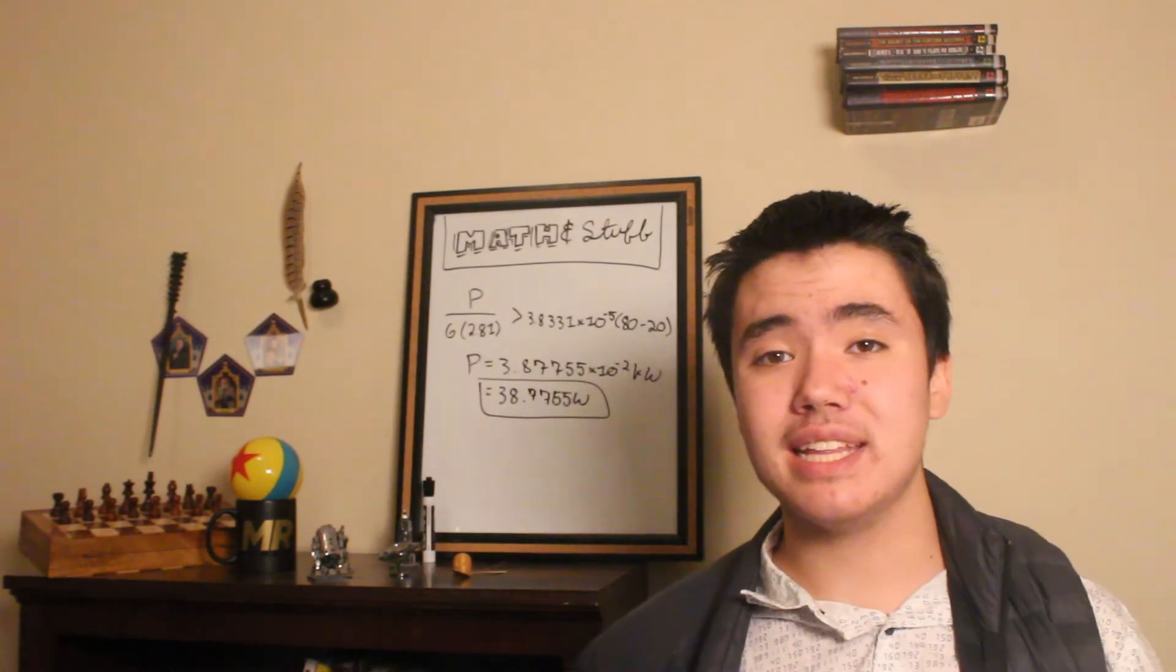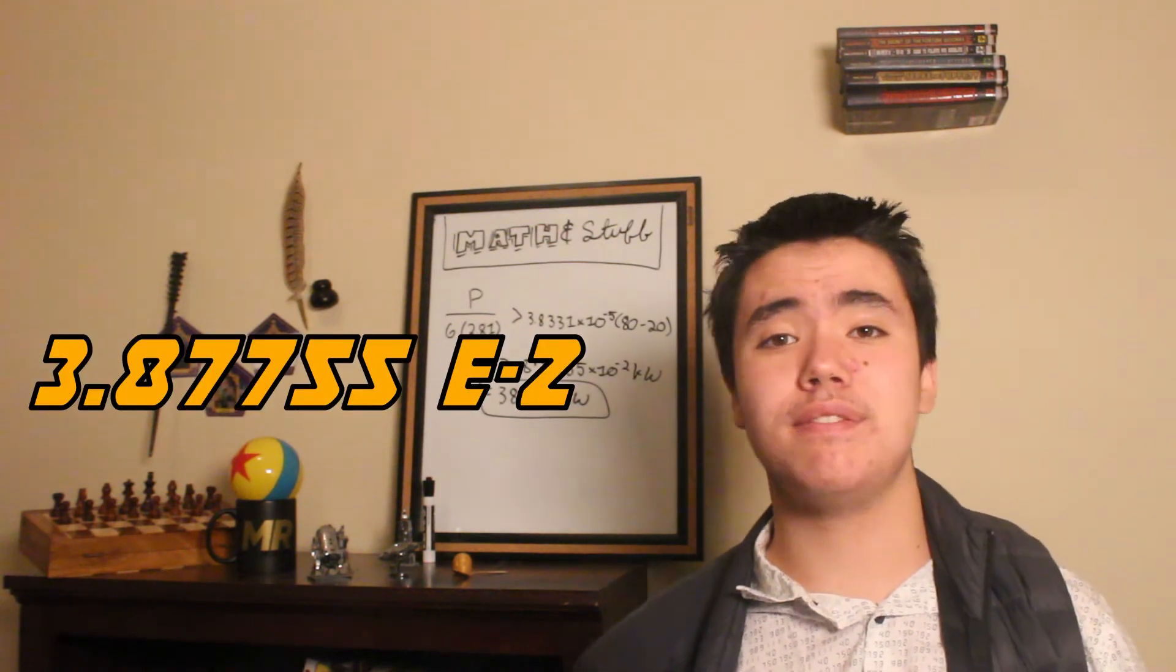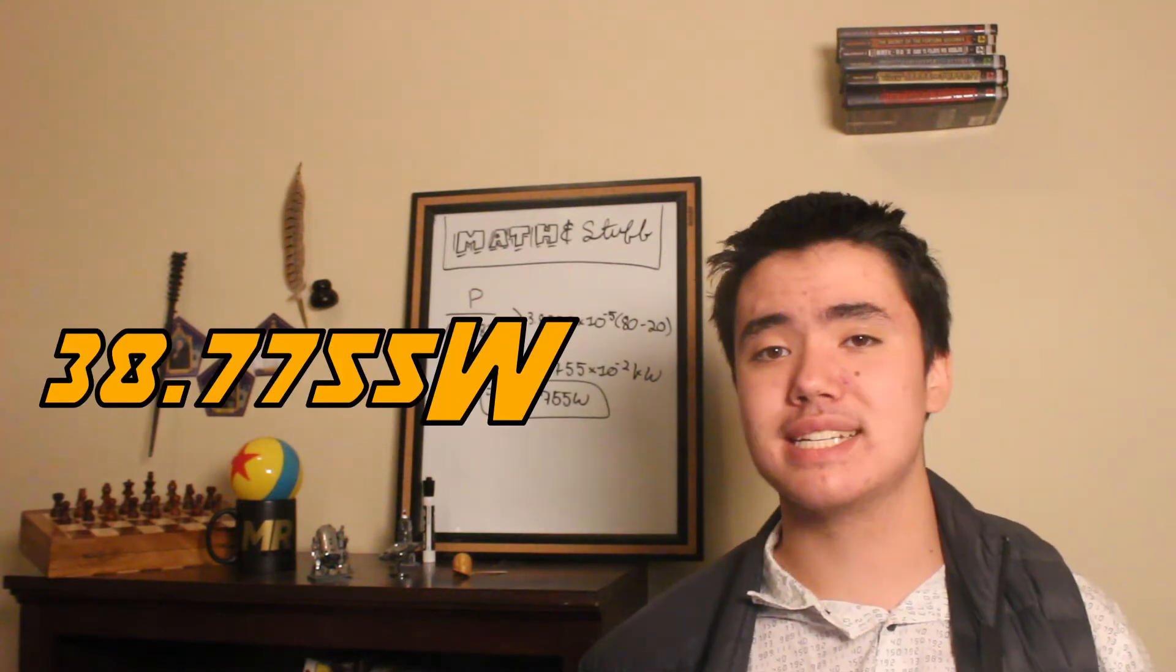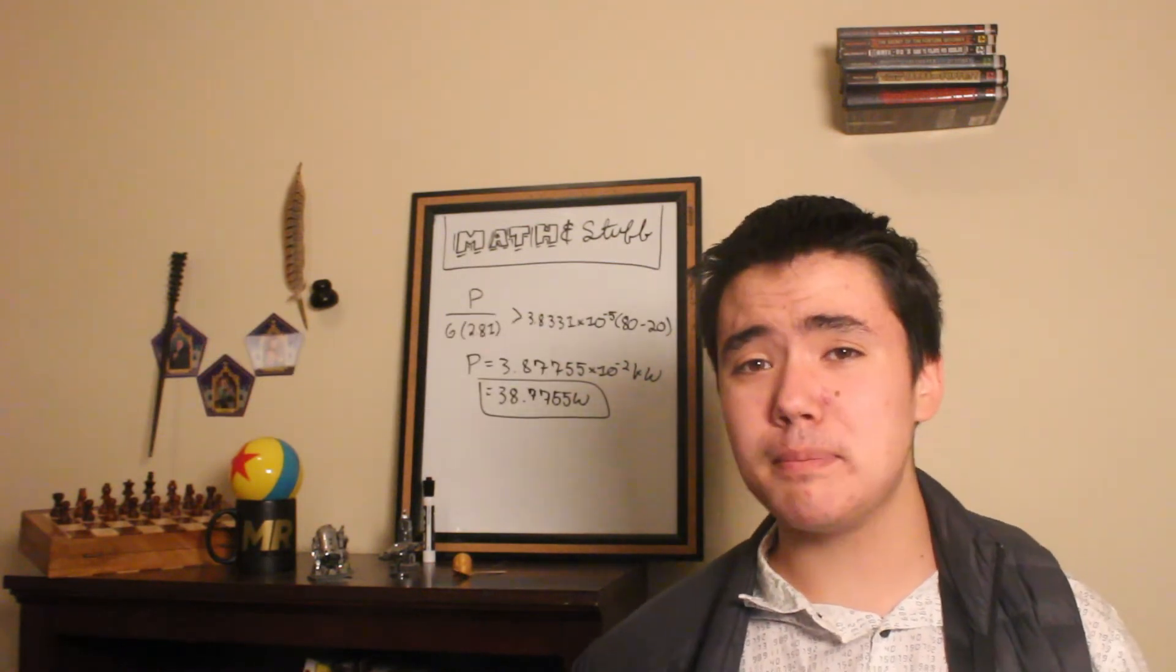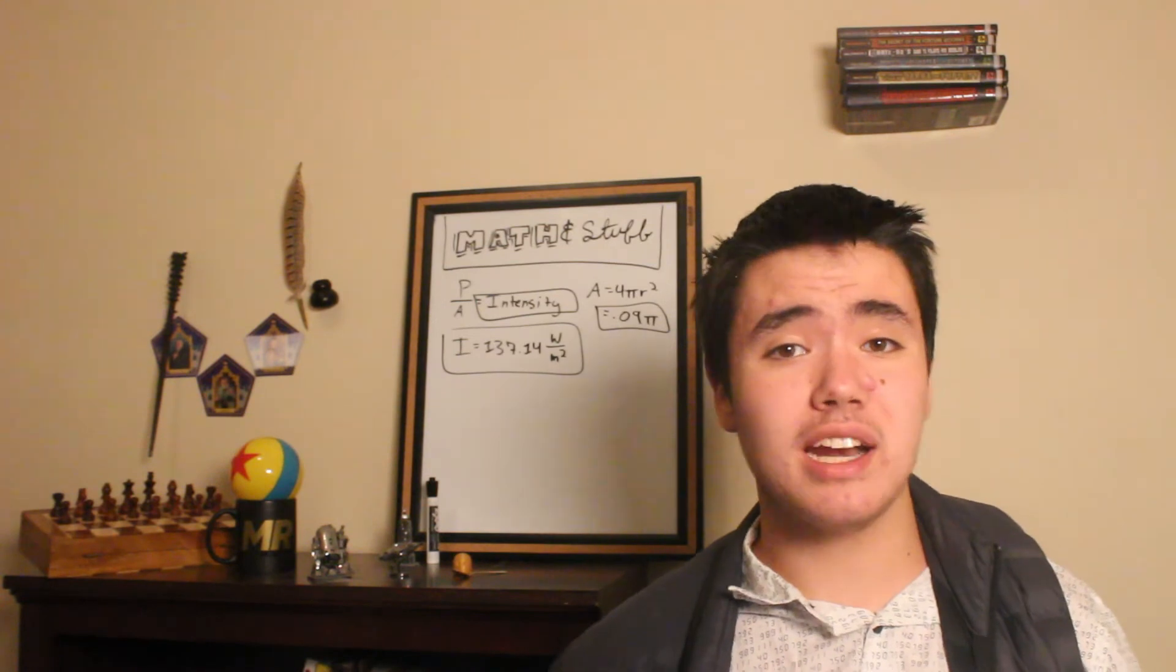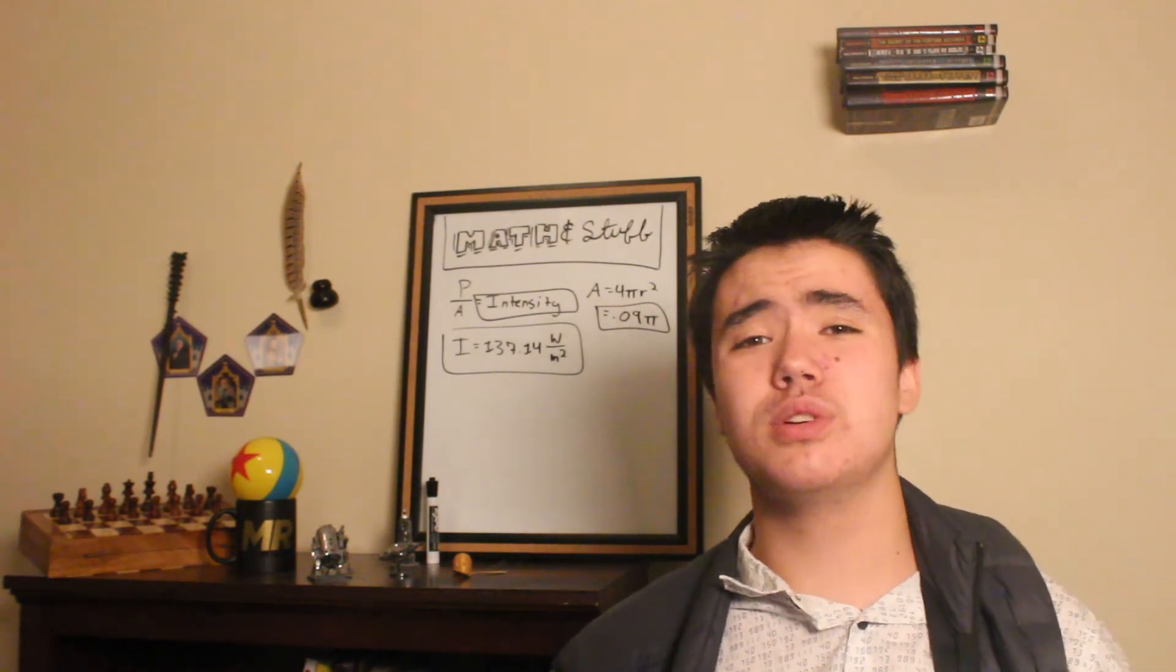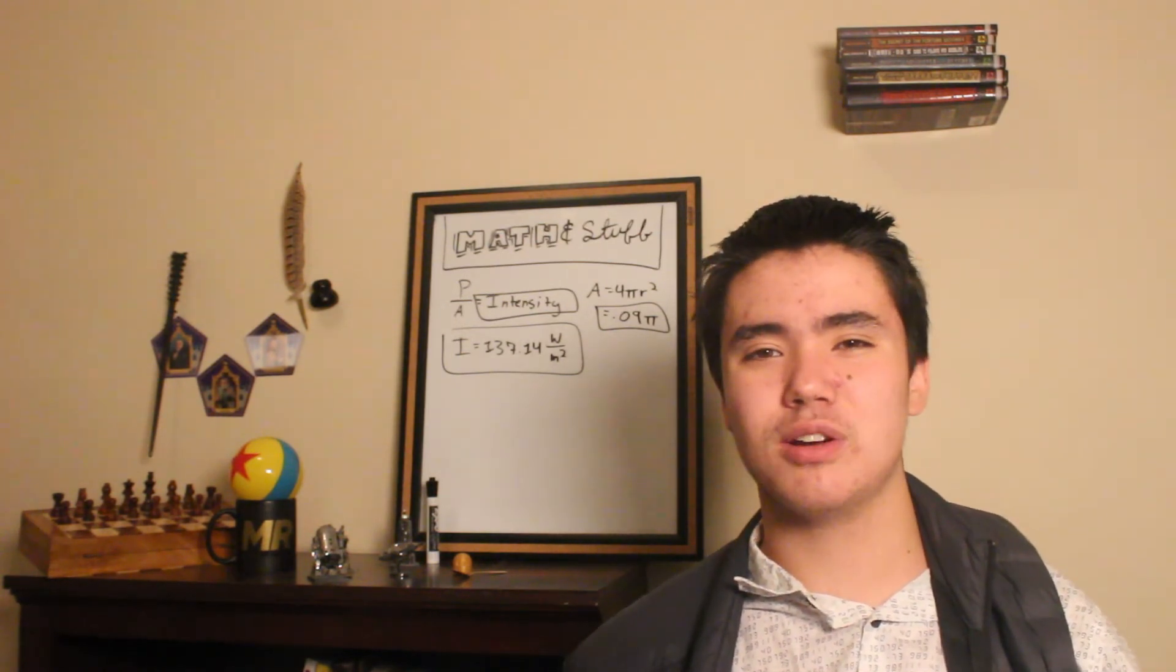When we do that, we get that the power we need to apply to this turkey must be greater than 3.87755 times 10 to the negative 2 kilowatts, or 38.7755 watts. That may not sound like a lot, but keep in mind we are only applying this with our voice. Now if you take that number and divide it by the surface area of our turkey, then we can get the intensity of the sound we have to apply to the turkey. I'm just going to assume that the turkey is a sphere with a 15 centimeter radius to make things easier on myself.